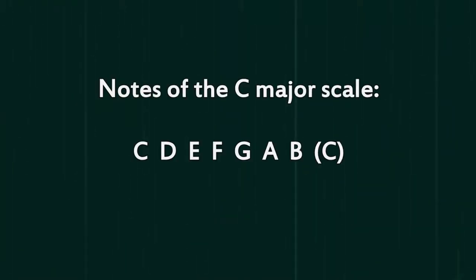As far as understanding how music actually works, the best starting point is the C major scale. Why? Because it's the standard that all other scales are compared to. Check this out. The notes of the C major scale are C, D, E, F, G, A, B.